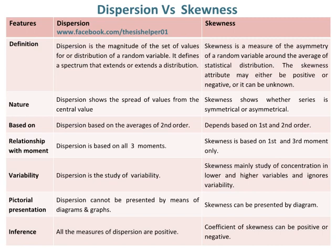Dispersion is based on the averages of the second order, whereas skewness depends on the first and second order. Dispersion is based on all three moments, whereas skewness is based on the first and third moments only.